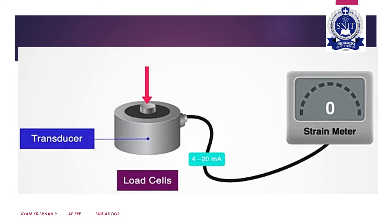There will be a transducer — in this case, the transducer is a strain gauge. The transducer converts force into an electrical signal. When weight is inserted, the resistance varies, like in a Wheatstone bridge. The concept of the Wheatstone bridge is the same as used in the strain gauge. The resistance variable is read using a strain meter.